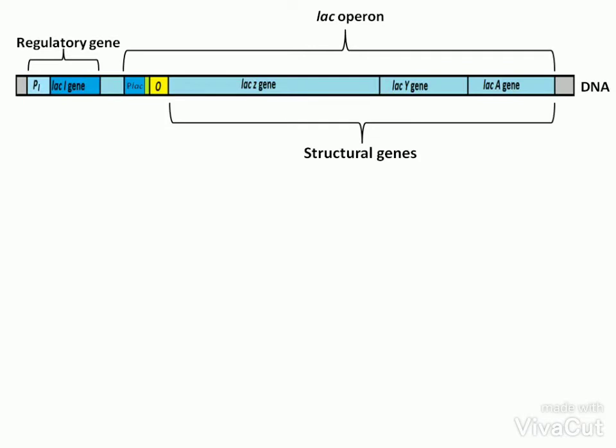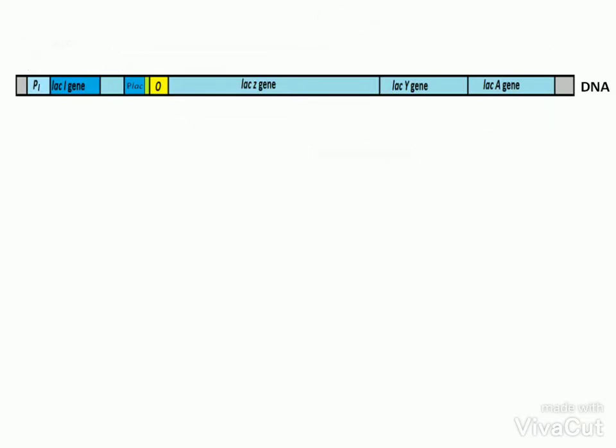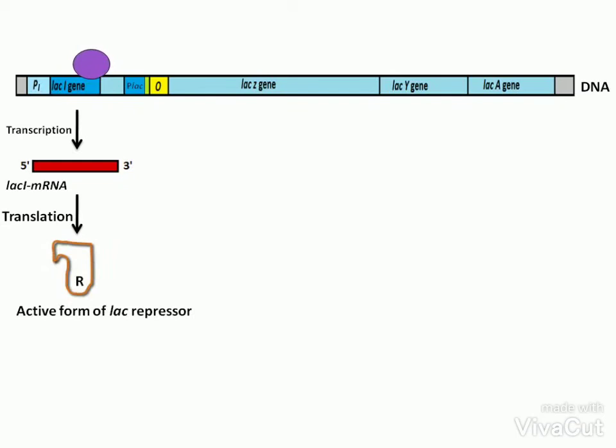These genes are transcribed by RNA polymerase to produce protein. But in this case, where lactose is absent, the RNA polymerase starts transcription at P-I and moves downstream. During the downstream movement, RNA polymerase transcribes LAC-I gene to produce LAC-I mRNA, which then translated into a tetrameric LAC repressor protein.